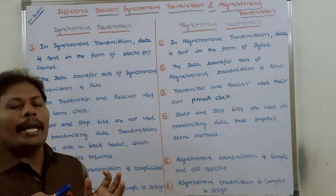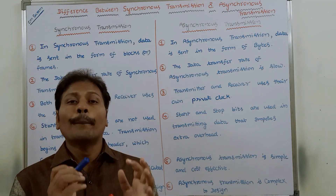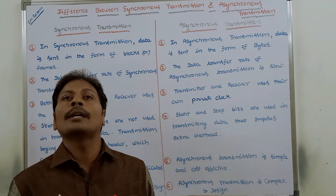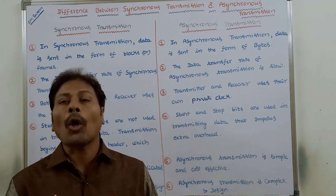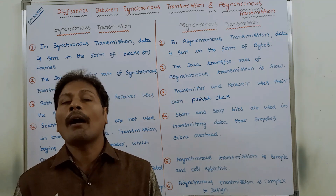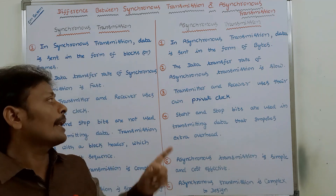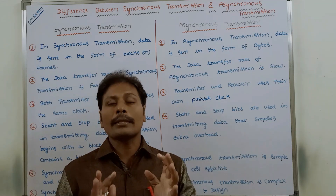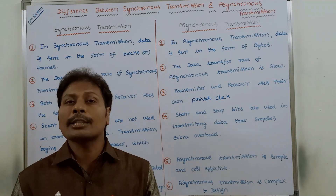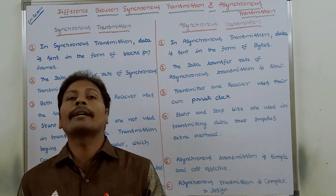The third point: in synchronous transmission, both transmitter and receiver use the same clock for synchronizing the data between them. Whereas in the case of asynchronous transmission, both transmitter and receiver use their own private clock.